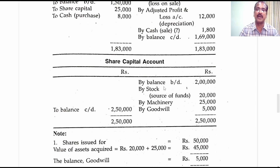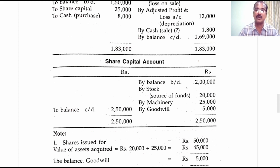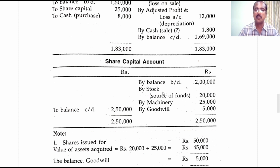Now the share capital account is opened. Being a credit item, the opening balance is written on the credit side and the closing balance on the debit side. The journal for purchase of assets from a company by issuing shares valued 50,000: stock account debit 20,000, machinery account debit 25,000, goodwill account debit 5,000, to share capital account. Among these three assets, purchase of a current asset — stock — by issuing shares should be treated as a source of fund in the funds flow statement.